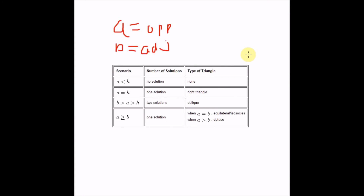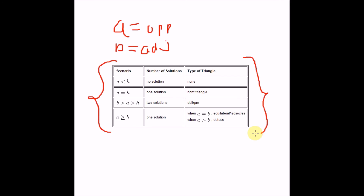After going through all those examples, let me place the scenarios back out there. Using A as the opposite side and B as the adjacent side: if the opposite is less than H, there is no solution; if the opposite is equal to H, there is one solution. This table basically states everything used throughout the examples.